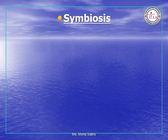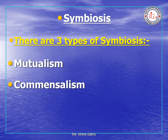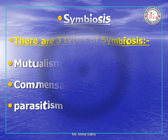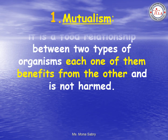The second food relationship is symbiosis. There are three types of symbiosis. Mutualism is a food relationship between two types of living organisms where each one of them benefits from the other and is not harmed.